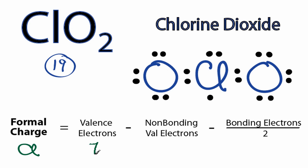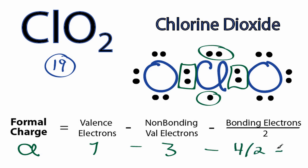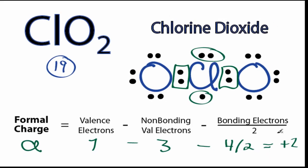For the chlorine, we have seven valence electrons for chlorine on the periodic table, minus non-bonding, so we have 2, 3 non-bonding, minus the bonding valence electrons, so we have 2, 4 of those, but we're going to divide that by 2, and that gives us a total of plus 2. That's the formal charge on the chlorine.